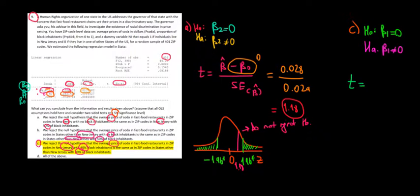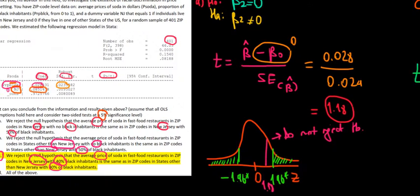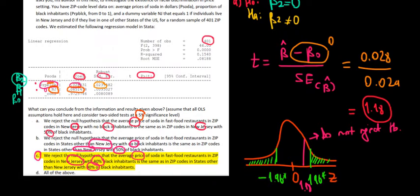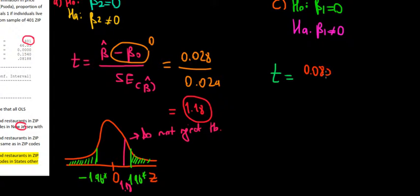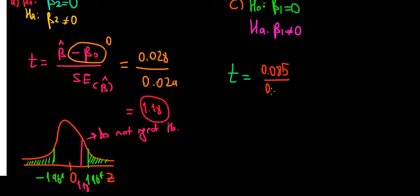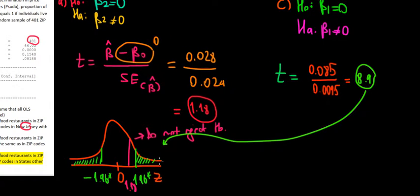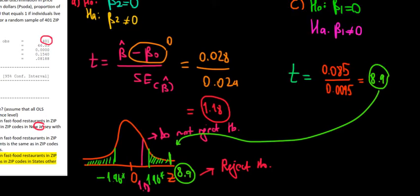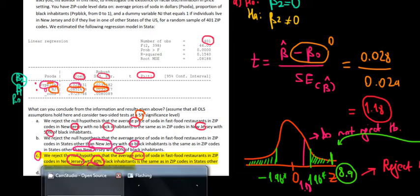Using the same logic, the t-value equals the sample coefficient of 0.085 minus 0, divided by the standard error of 0.0095, which gives a t-value of approximately 8.9. This is extremely far out on the z-distribution, well into the rejection region. Therefore, we reject the null hypothesis — the location of being in New Jersey has a significant effect on the average price of soda. This is the correct answer, so part C is highlighted as true.